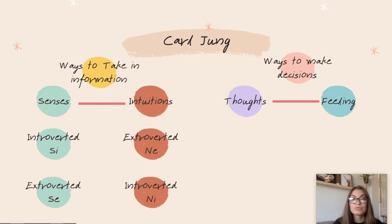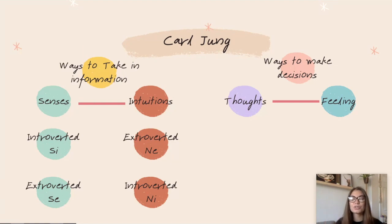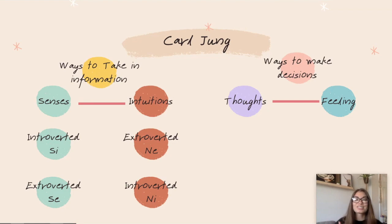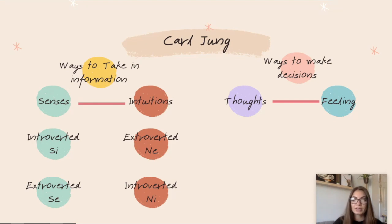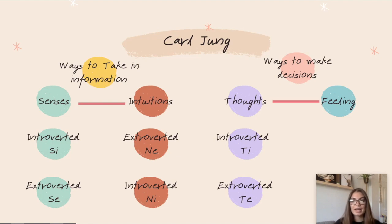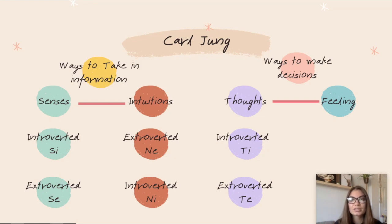Intuition can also be extroverted or introverted. Extroverted intuition focuses on the outer world — what are the possibilities, what could happen? Introverted intuition is about what's happening in your own mind, what dots are being connected internally. Similarly, thinking can be introverted — does this make sense to me, is this logical? People with introverted thinking can have difficulty in school because they won't just accept other people's thoughts at face value; things have to be logical to them personally.